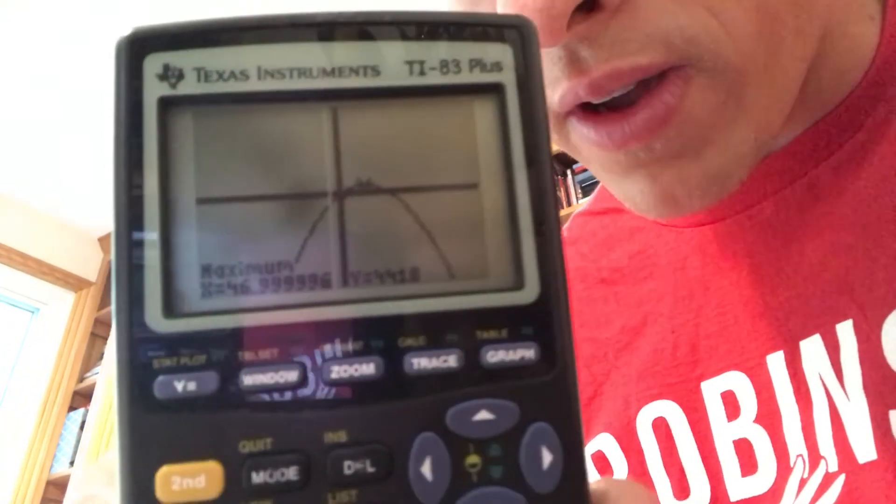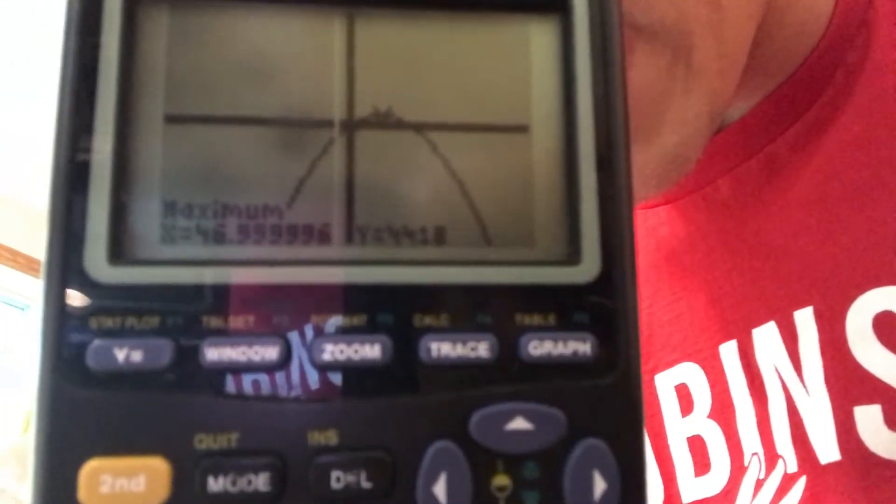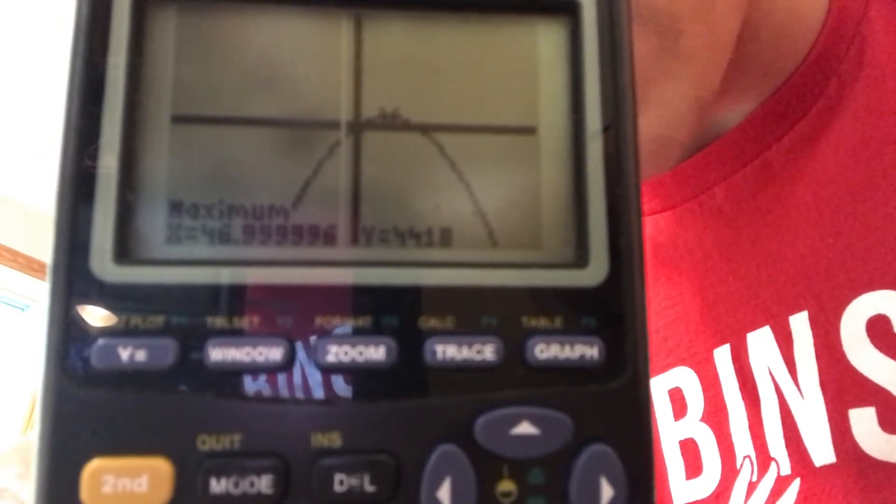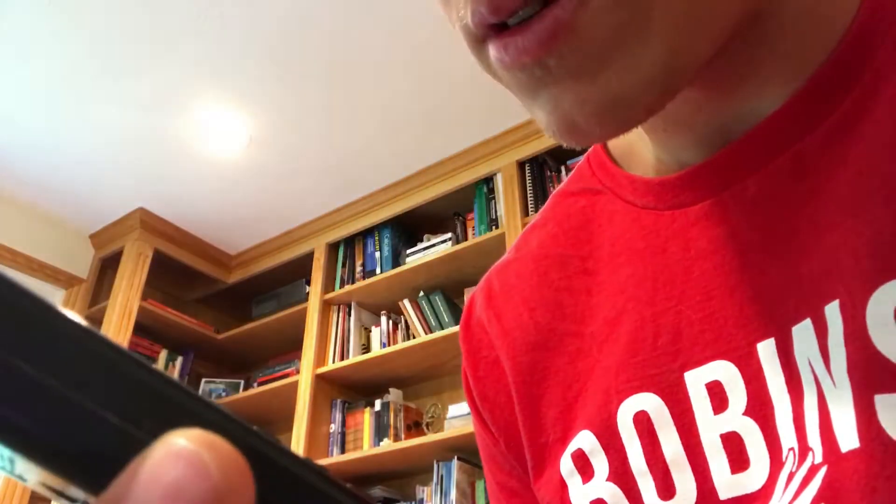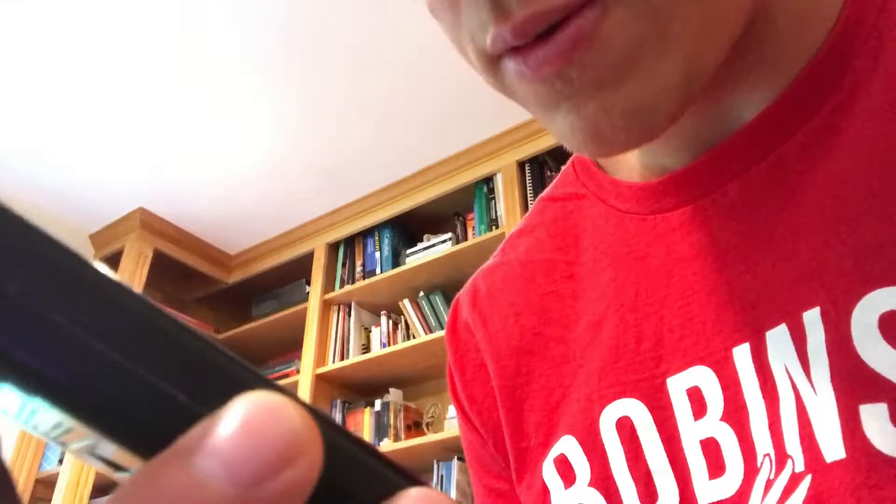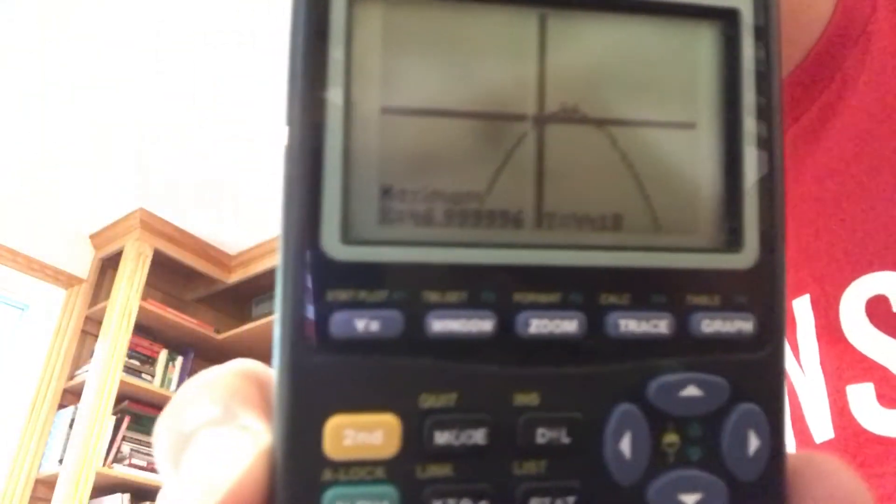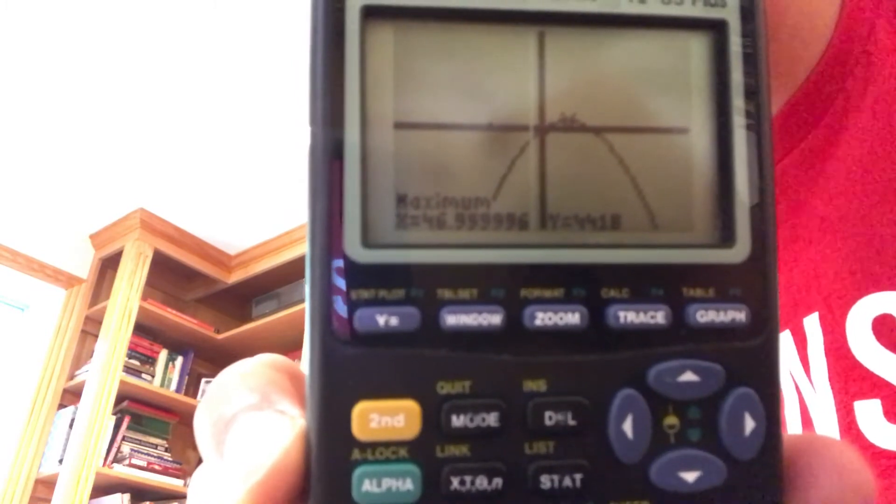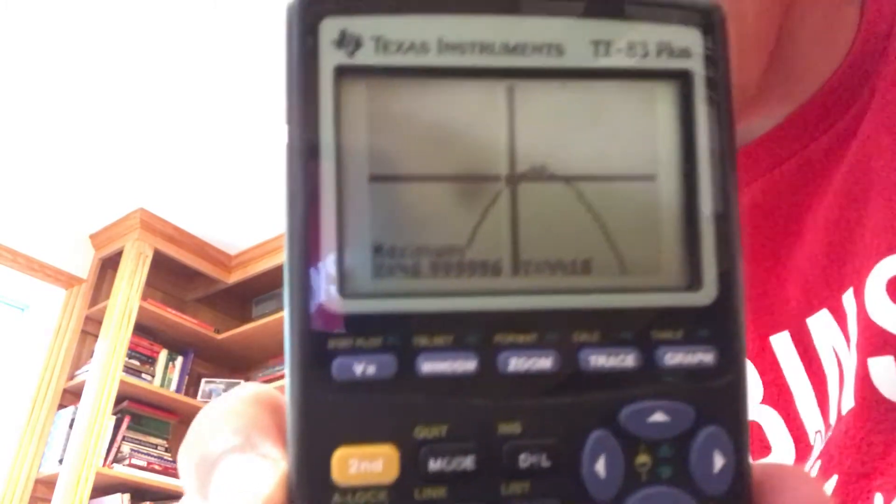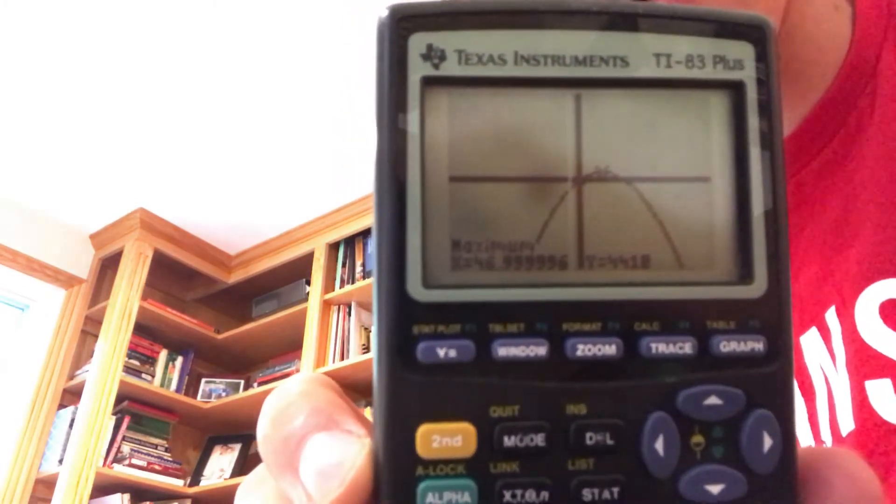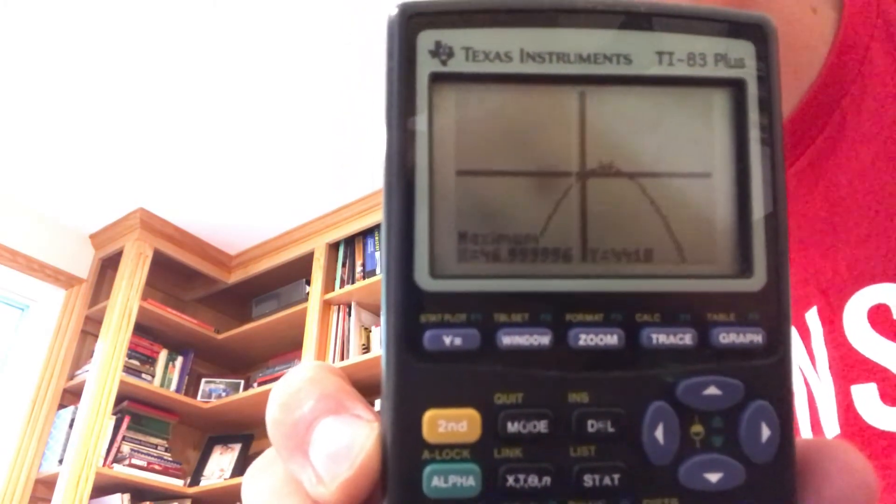And it should give me an answer. So if you look very closely, it's going to say 46.999996 for X and Y equals 4,418. So my guess is we actually want to have 47.0. And that's just the calculator being itself. I'm not sure why it gave us that answer quite.